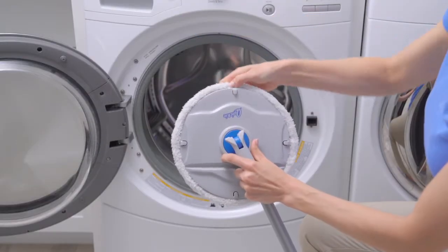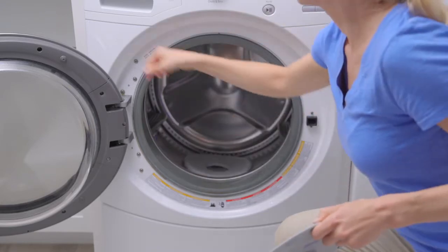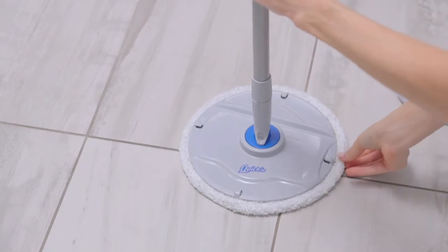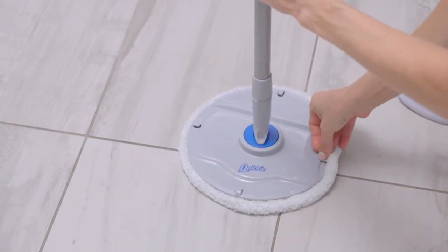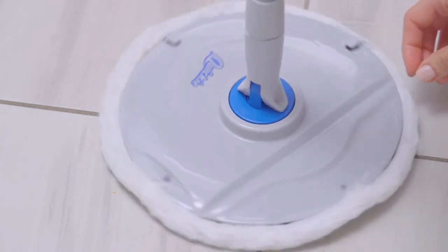The microfiber scrubbing pads remove easily and can be laundered in your washing machine. After laundering, attach the clean microfiber mop to the mop head by securing the four elastic loops on the pad to the four hooks on the mop.